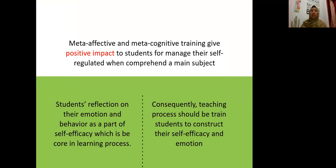As for Meta-Affective, some research shows that Meta-Affective and Meta-Cognitive training can give a positive impact to students. For example, students can reflect on their motivation and behavior as part of self-regulation, which is part of the co-learning process. This gives consequences for how we design teaching and learning in science — how to design science learning that can guide students by using Meta-Affective and Meta-Cognitive.